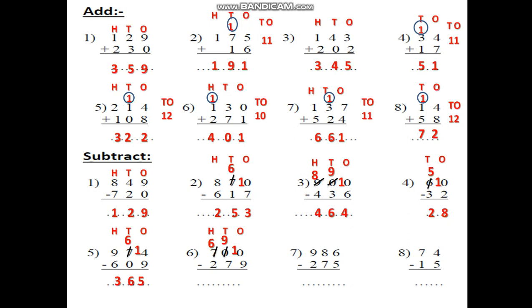10 minus 9. After 9: 10. It will be 1. 9 minus 7. After 7: 8, 9. It will be 2. 6 minus 2. After 2: 3, 4, 5, 6. It will be 4. The answer is 421.